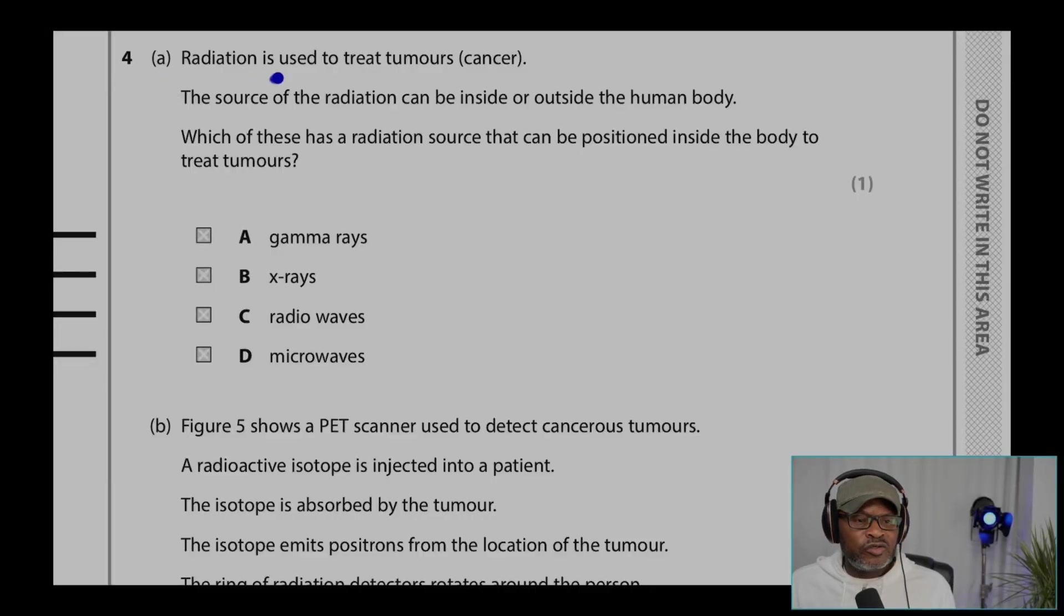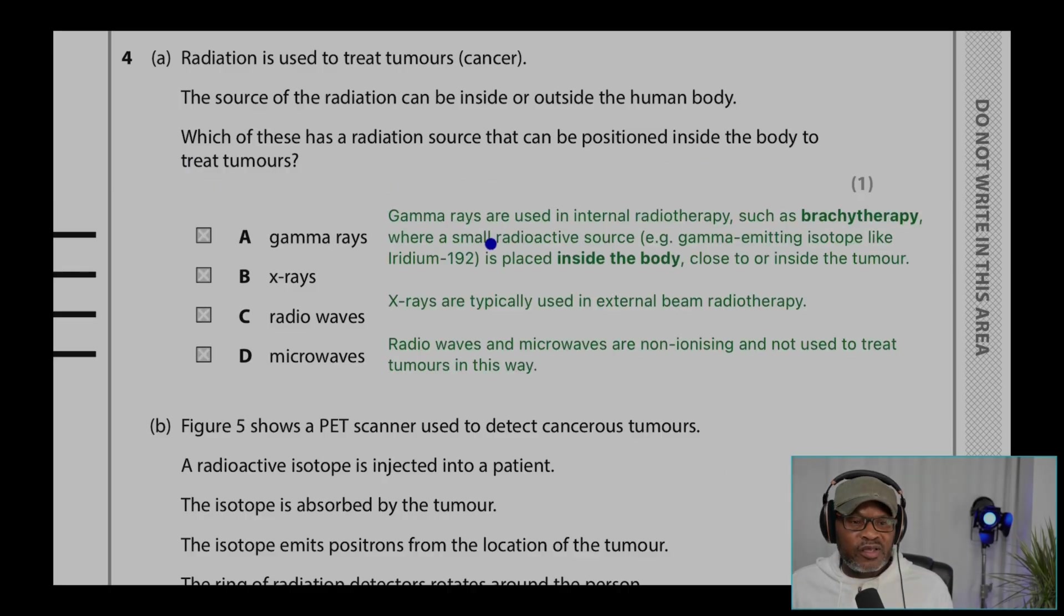Question 4A. Radiation is used to treat tumors or cancer. The source of the radiation can be inside or outside the human body. Which of these has a radiation source that can be positioned inside the body to treat tumors?